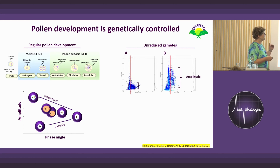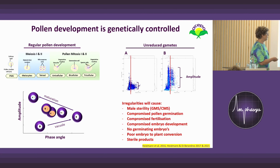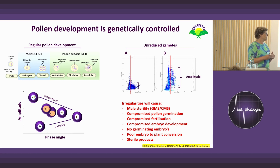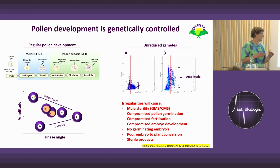In some genotypic backgrounds you have unreduced gametes, which give you diploid pollen. When you use that for crosses you end up with triploid species, or you have other problems like male sterility because of unbalanced chromosomes, compromised pollen germination and fertilization, and poor embryo development. Especially when you have odd chromosome numbers, the embryo will not germinate or progress into a plant, and if they do, some products might be sterile.